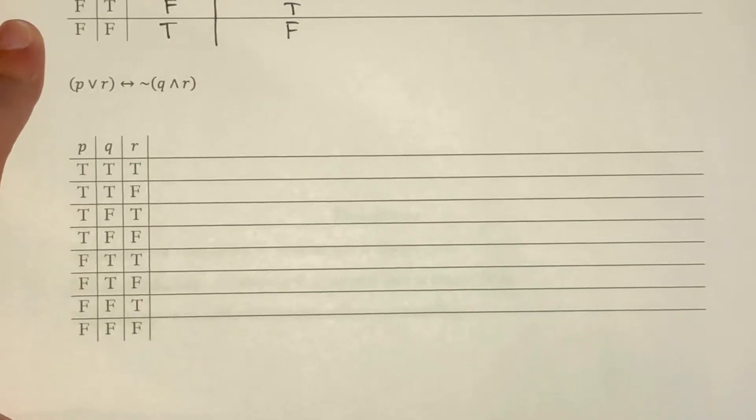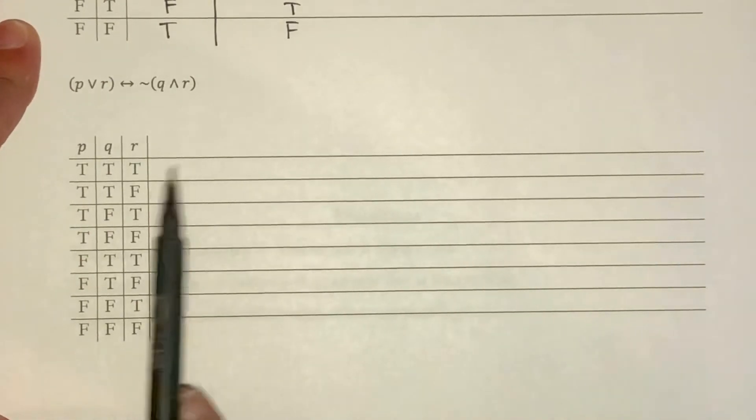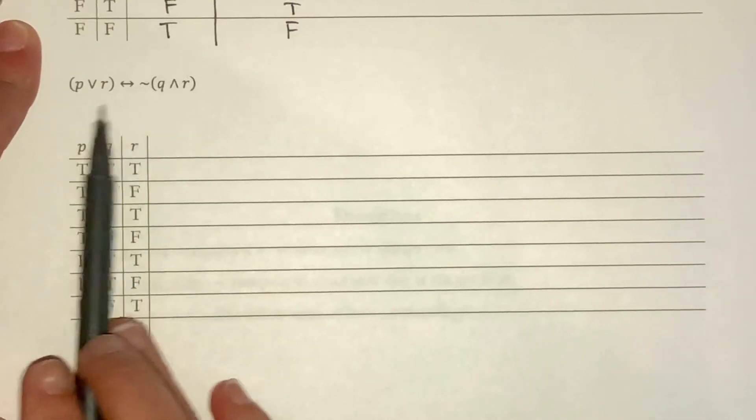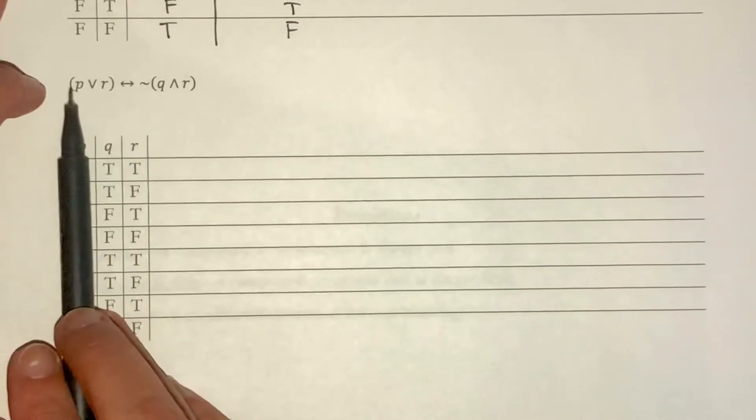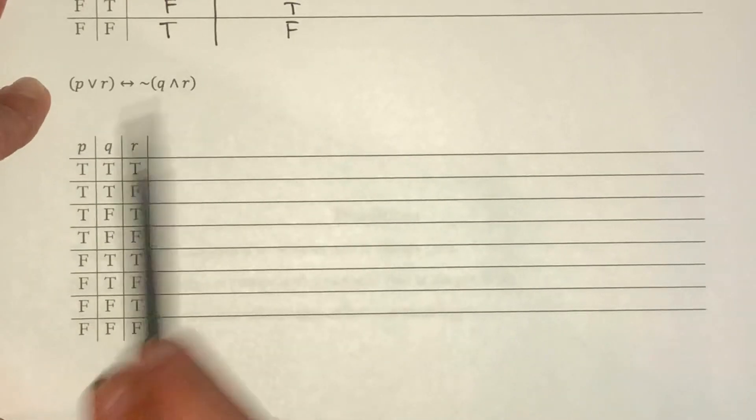This is part 3 of section 3.4. I want to create a truth table for this statement here. It is a biconditional at the end, and I need to figure out each side before I can do that.